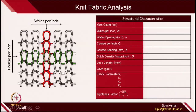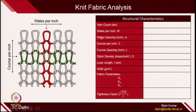In doing analysis, some key words you will encounter frequently. The first is yarn count — what yarn is used for making this fabric and what was its linear density. Tex is defined as the weight of yarn in grams per 1000 meter length. Wales per inch — how many wales you can count per unit inch. Wales spacing — what is the distance between 2 wales in a series. Course per inch — how many courses you can count in an inch.